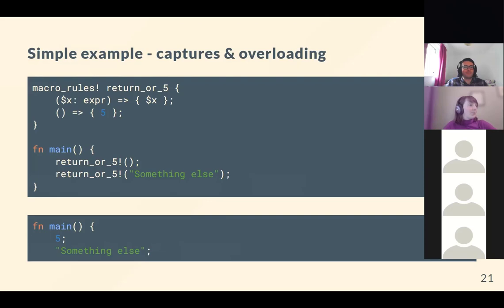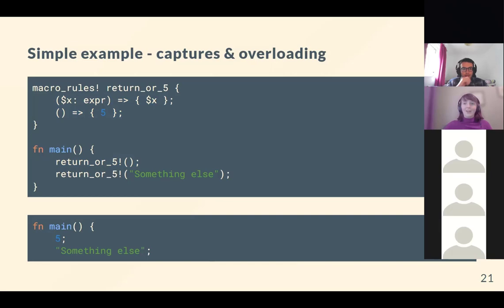Now we bring in what looks like overloading with multiple match arms and captures. The second arm still matches on nothing and returns five. The first arm captures some kind of expression — in the Rust sense, so it could be a literal, a variable, or something like three plus four — and returns that captured expression back out.